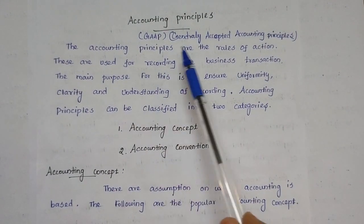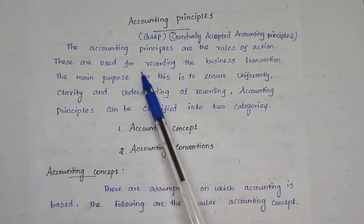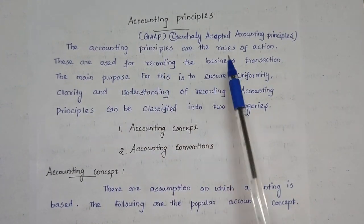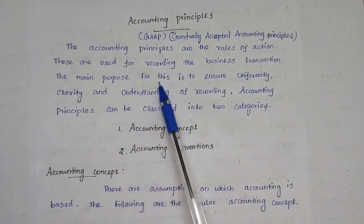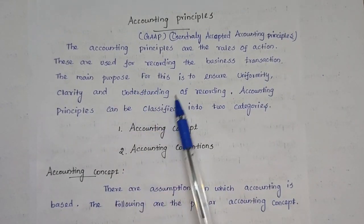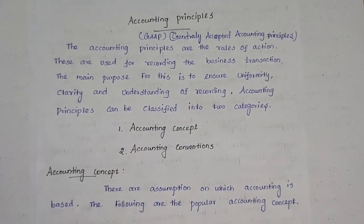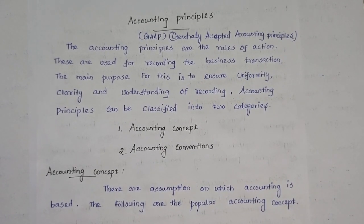The Accounting Principles are the rules of action. These are used for recording the business transaction. The main purpose is to ensure uniformity, clarity and understanding of recording. We know that each and every organization records their transactions and also they prepare various accounting statements.